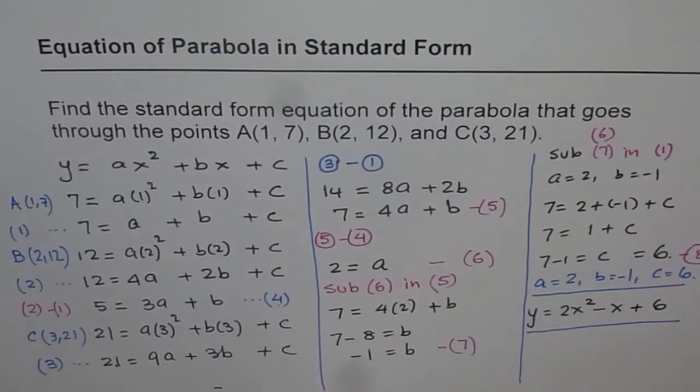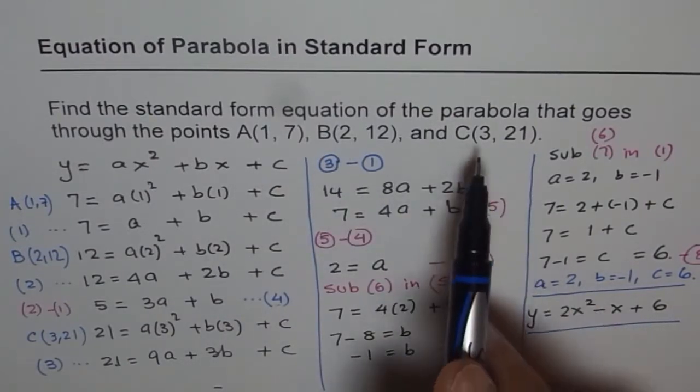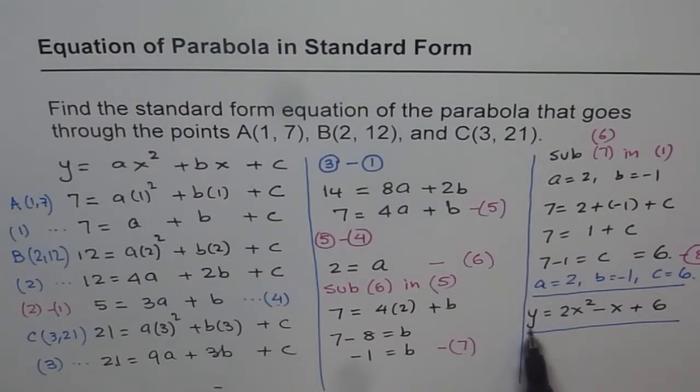You can always verify, once you get your standard form equation, that these points really lie on that. You can substitute 3 for x and figure out if you really get 21 for y. That is the way to check it.